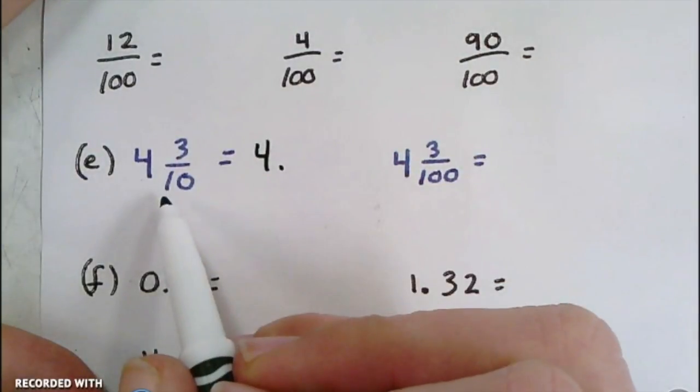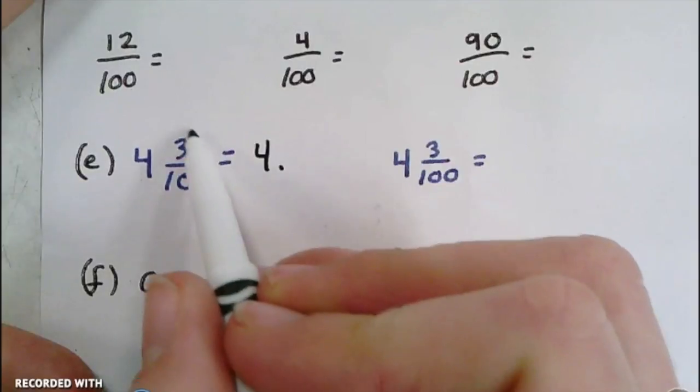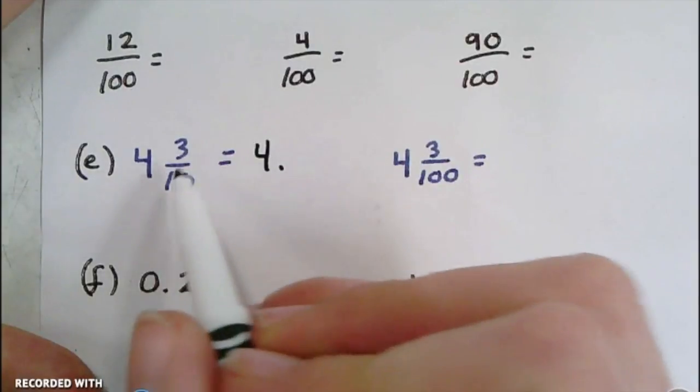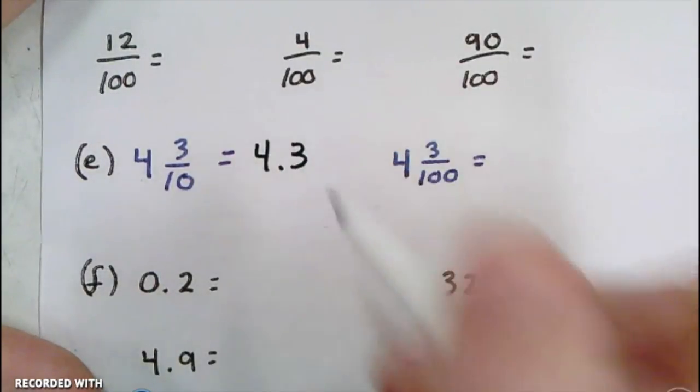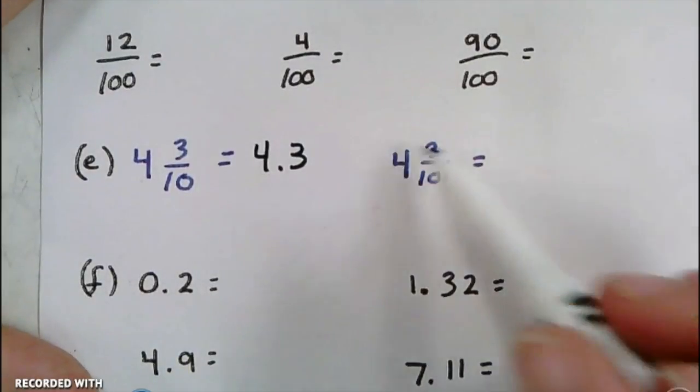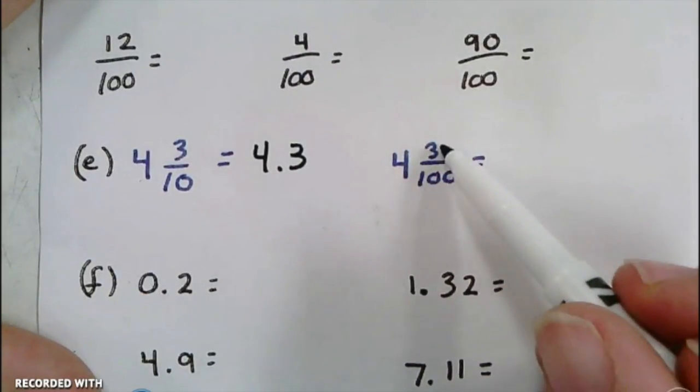and then I'll take the fraction part and write it as 3 tenths, which means the 3 is going to end in the tenths place. So I have 4.3. Go ahead and try this one on your own: 4 and 3